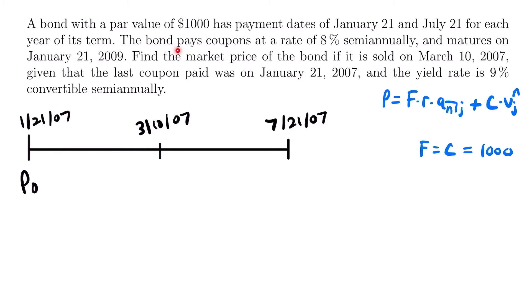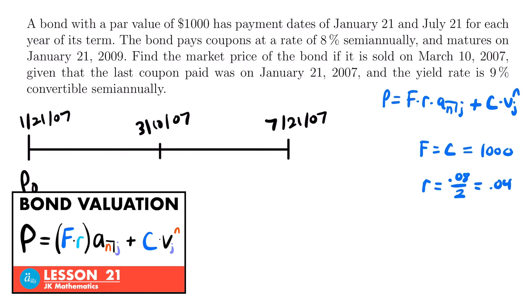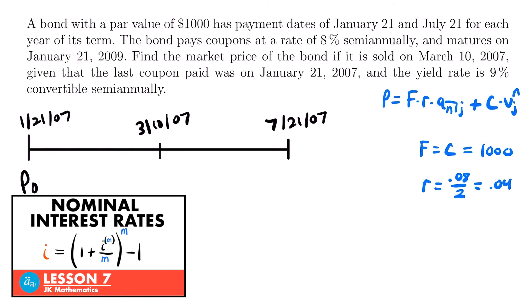We're told the bond pays coupons at a rate of 8% semi-annually. Remember, these rates for bonds are nominal interest rates convertible semi-annually, so to find the coupon rate r we divide by 2: 0.08 divided by 2 equals 0.04. If you don't understand why, I'd recommend watching our video on bond valuation as well as our video on nominal interest rates.